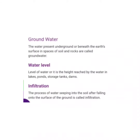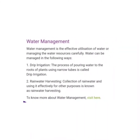Water level. The water level is the highest level reached by water in a lake, pond, storage tank, or dam. Now, infiltration: the process of water seeping into the soil after falling onto the surface of the ground is called infiltration.